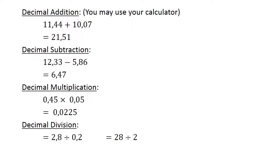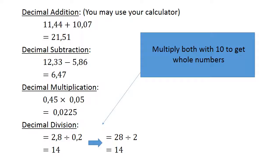Decimal division. 2.8 divided by 0.2. Multiply both to get whole numbers. 28 divided by 2 equals 14.